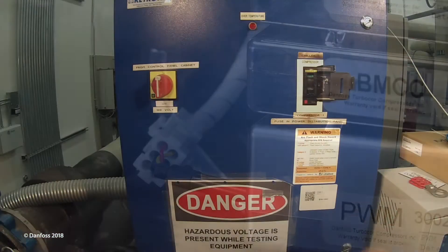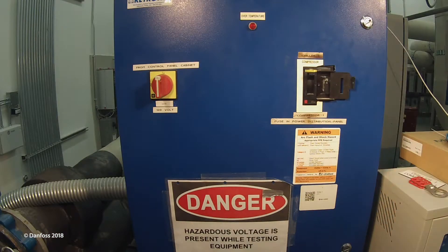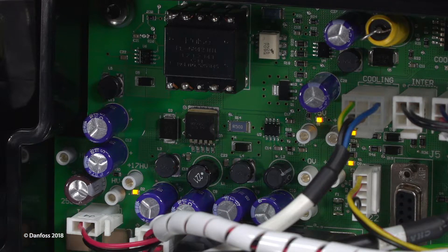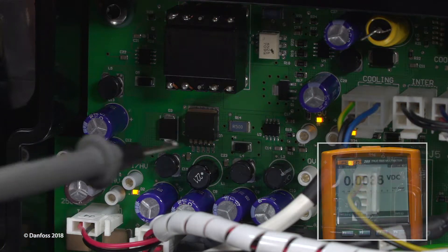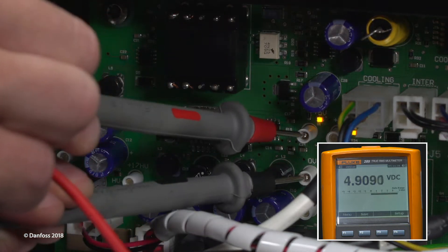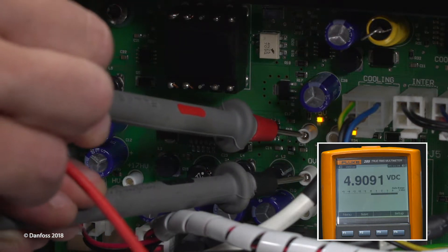Reinstall the PWM output cables. Apply power to the compressor to determine if the PWM is draining energy. Verify the related test points on the backplane using a multimeter set for DC voltage measurements. Insert the leads to the positive 5 and 0 volt test points.